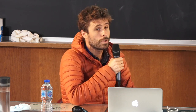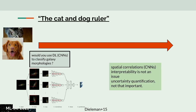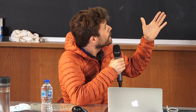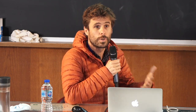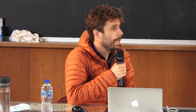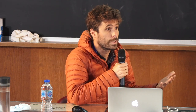I want to introduce the 'cat and dog ruler,' which essentially addresses: when faced with an astrophysical problem, how do you decide what machine learning flavor to use? When you have a classification problem — for example, classifying galaxy morphologies — I think close to 100% of the audience would say yes, use machine learning. It's exactly a cat-and-dog classification problem. There are spatial correlations, so you'd use convolutional neural networks. Interpretability is not really an issue, and uncertainty quantification isn't a big problem either.